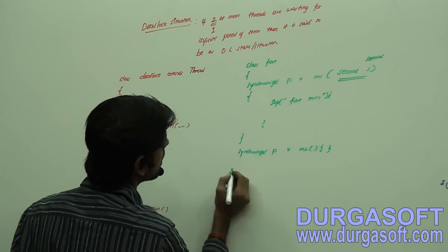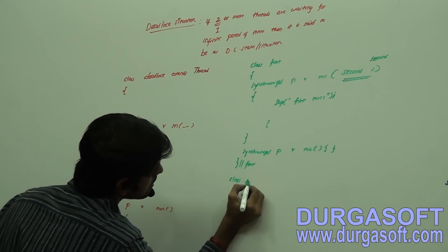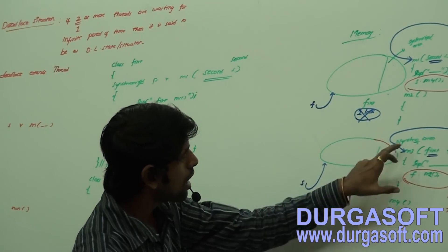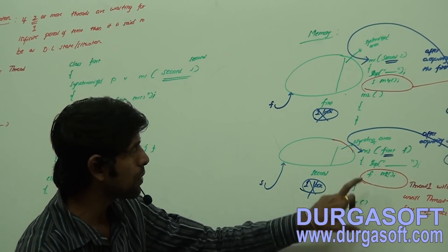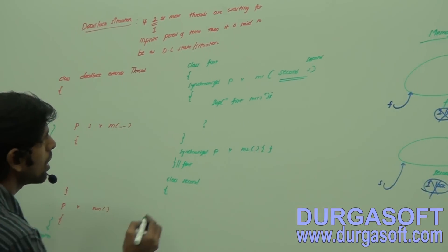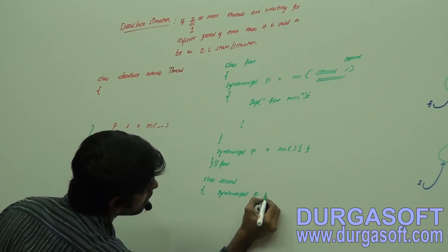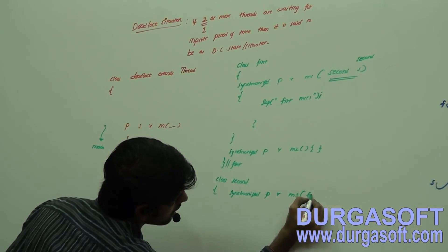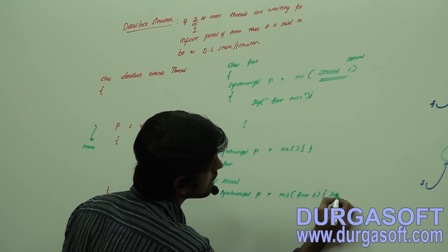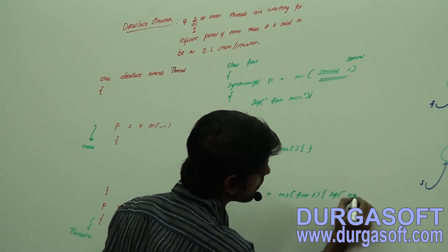Take one more synchronized method within this class: synchronized public void m2. Let it have a dummy implementation. Now end the first class. Take class Second. Within class Second, how many synchronized methods should there be? Two synchronized methods with names m3 and m4. m3 method has an argument as 'first'. Now take synchronized public void m3, take an argument as First f.